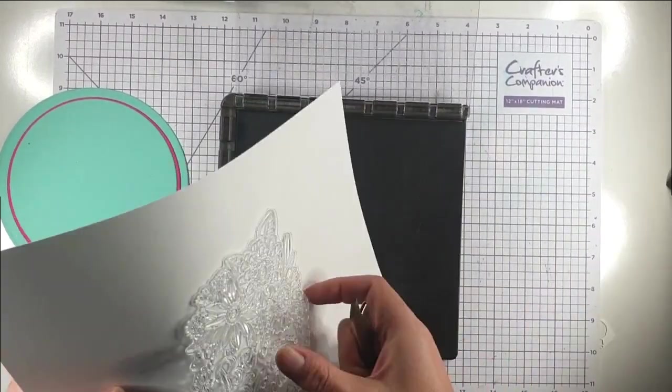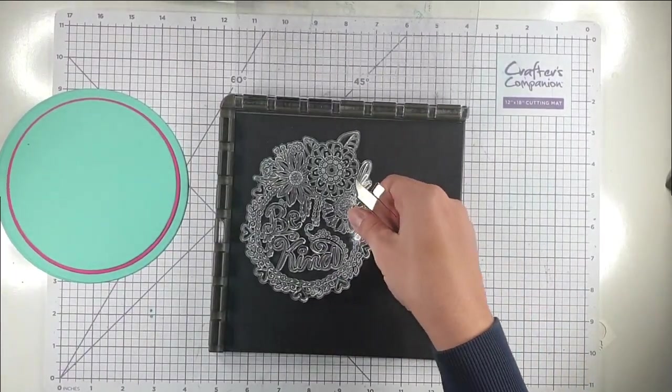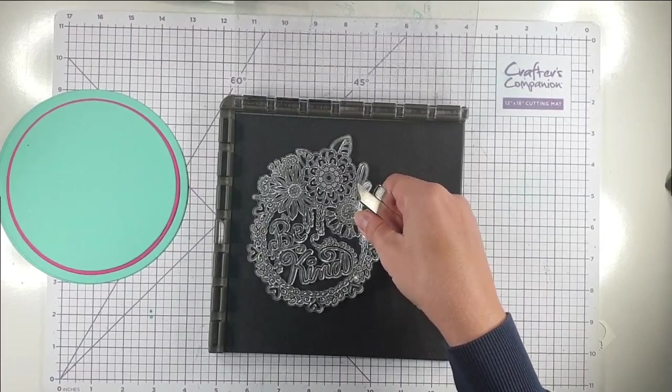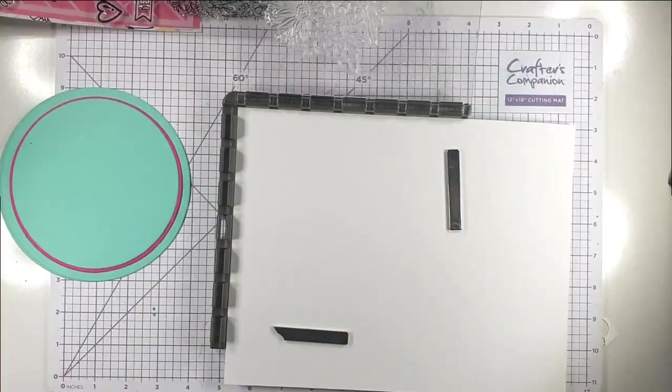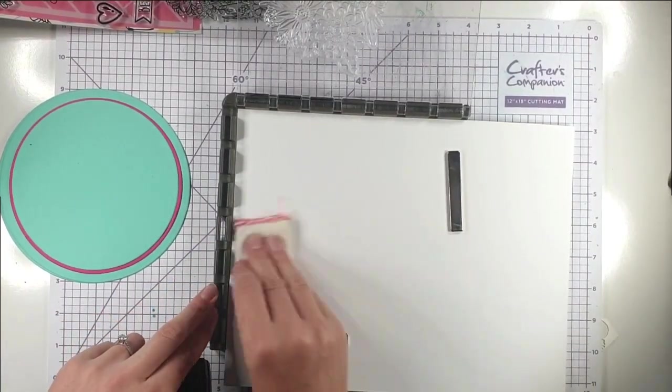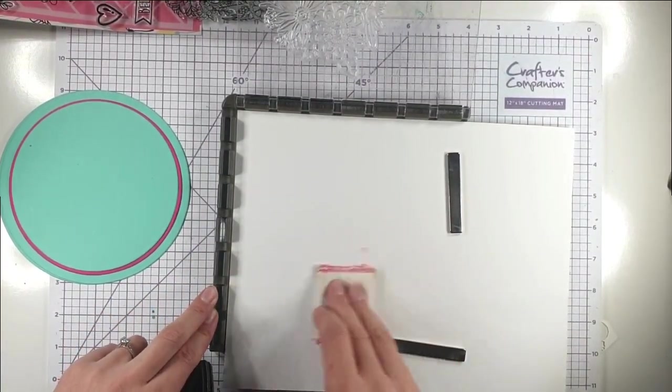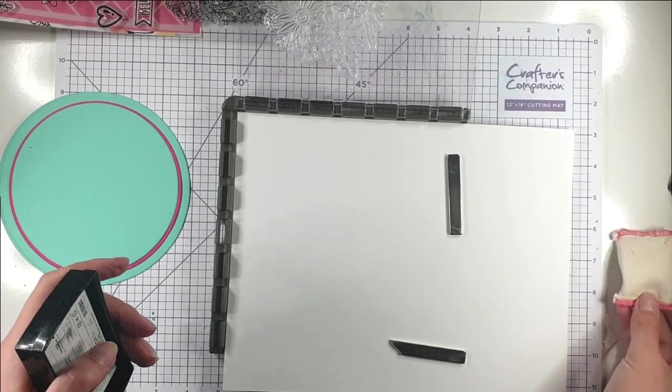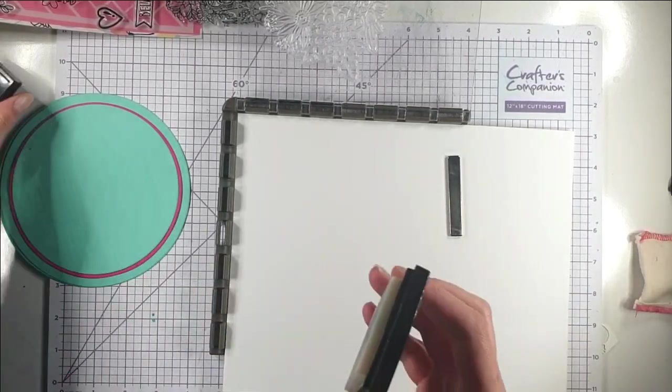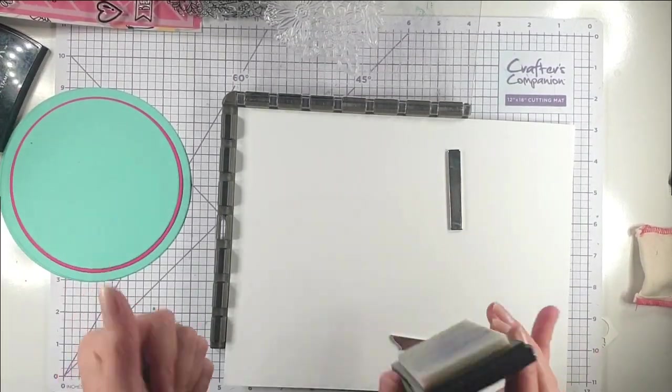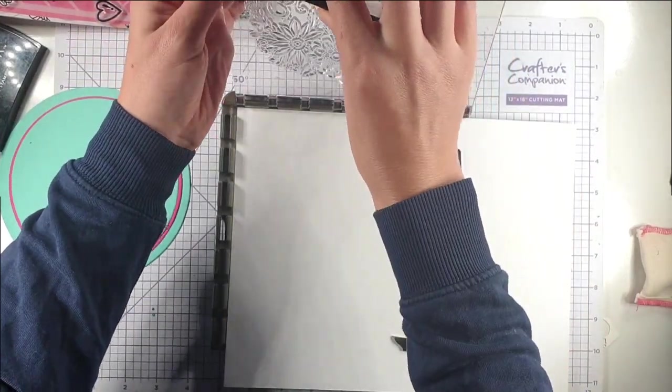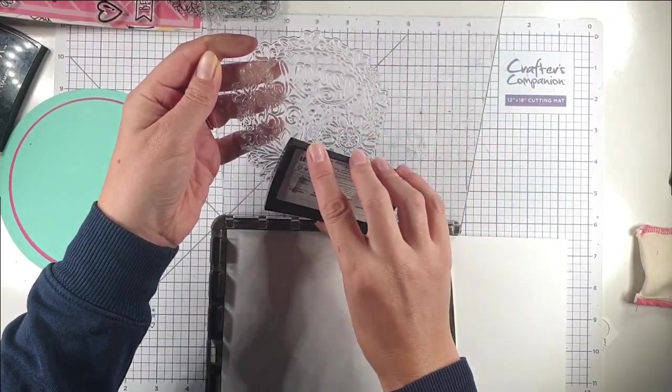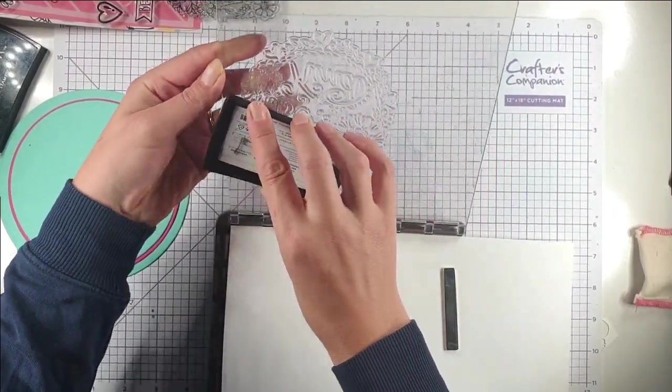When I use my stamp positioner, I find it easier with really huge stamps. If I'm heat embossing, I always run my embossing buddy over the top first because it helps stop your embossing powder from sticking where you don't want it. Then I'm going to ink my stamp with Versamark.